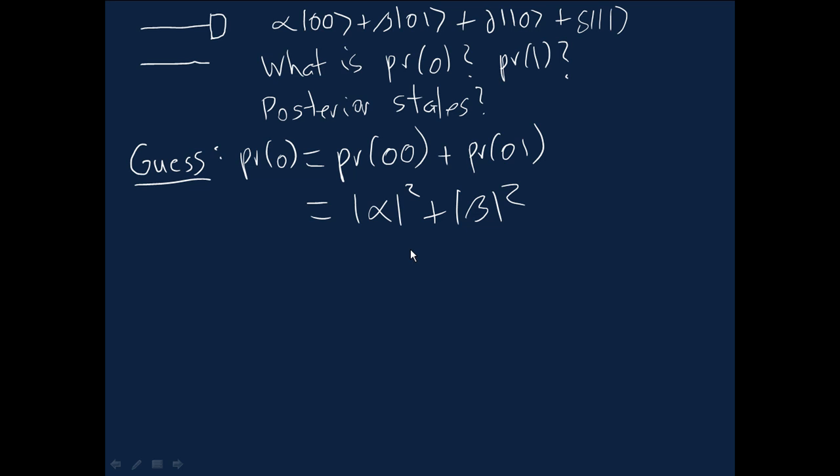There's actually a simple physical argument suggesting that this has to be true. Imagine that this second qubit was a long, long, long way away. If we do a measurement here on this first qubit, the probability of getting measurement outcome 0 can't depend on anything that happens over there. It doesn't matter whether we leave the second qubit alone or we actually also measured it in the computational basis. The probability of getting that measurement outcome must be just the same in those two instances. That's motivation for making this guess, and in fact, it's the rule that we're going to adopt.